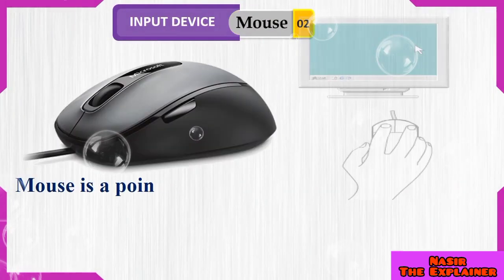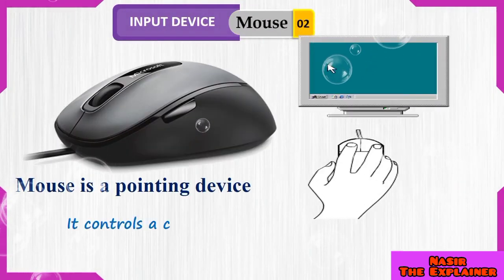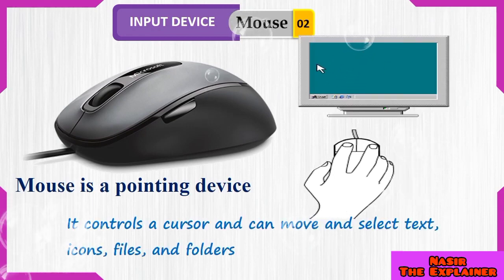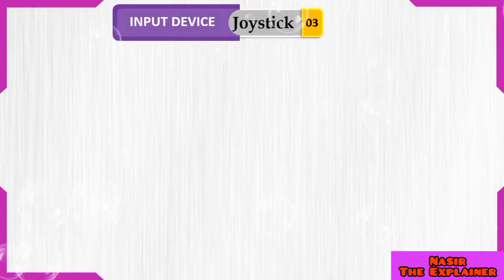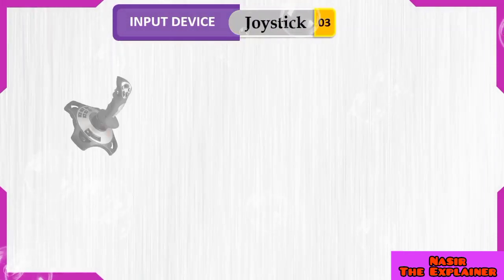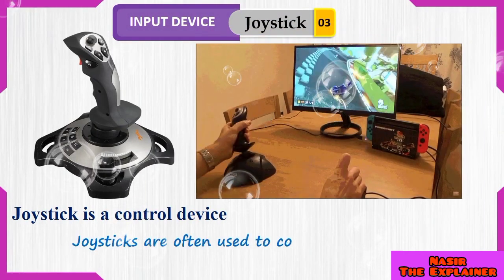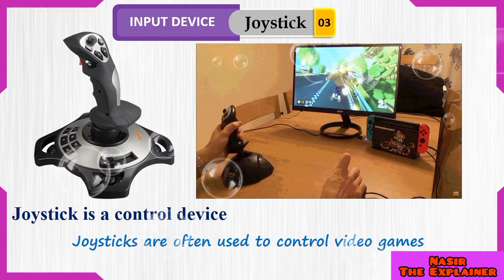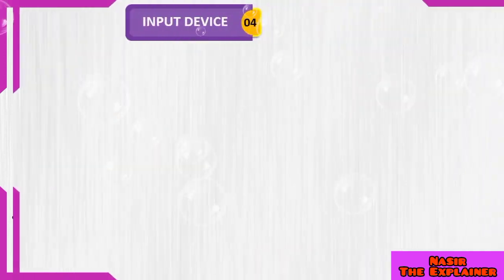Mouse is the second most familiar input device. It is also a pointing device — it controls the cursor and is used to select different items. Joystick is a controlling input device. Joysticks are often used to control different video games.